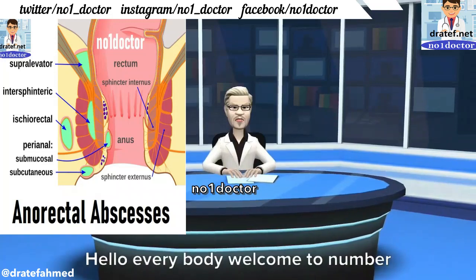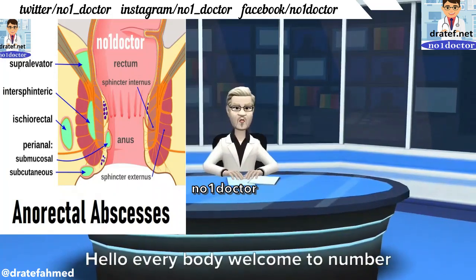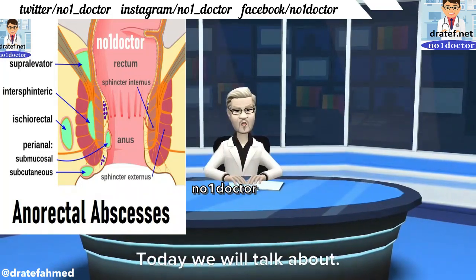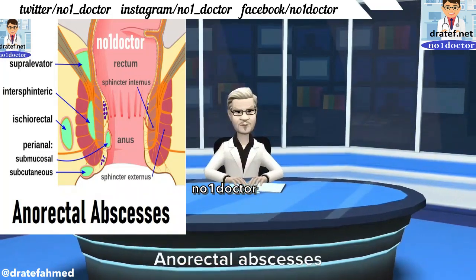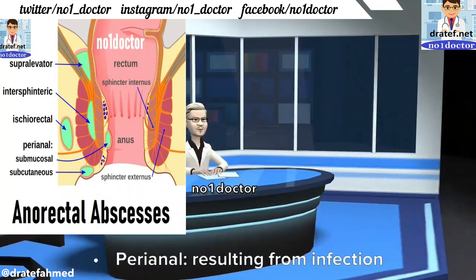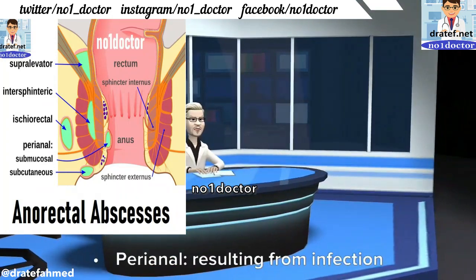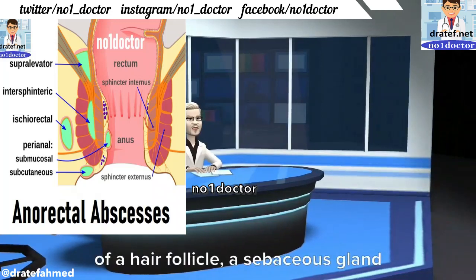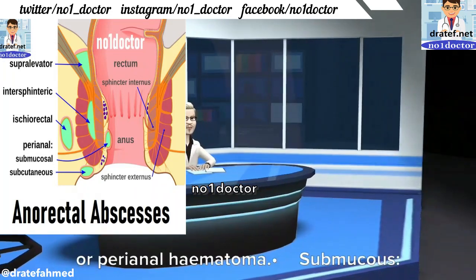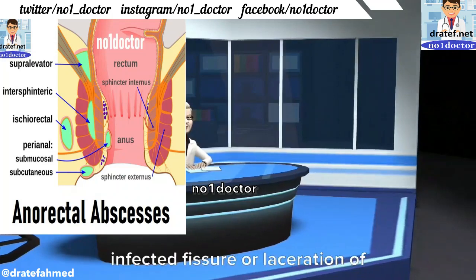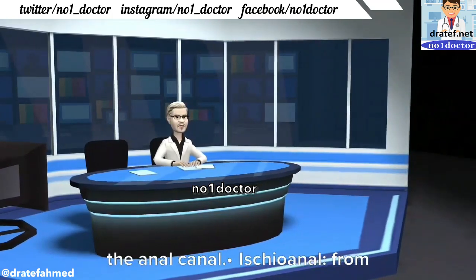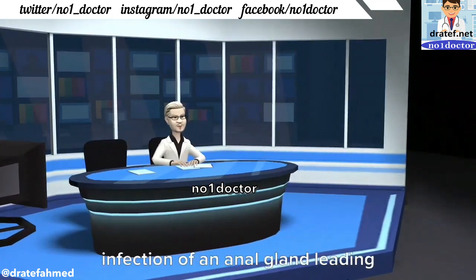Hello everybody, welcome to Number One Doctor channel. Today we will talk about anorectal abscesses classification. Perianal abscess resulting from infection of a hair follicle, a sebaceous gland, or perianal hematoma, submucous infected fissure, or laceration of the anal canal.